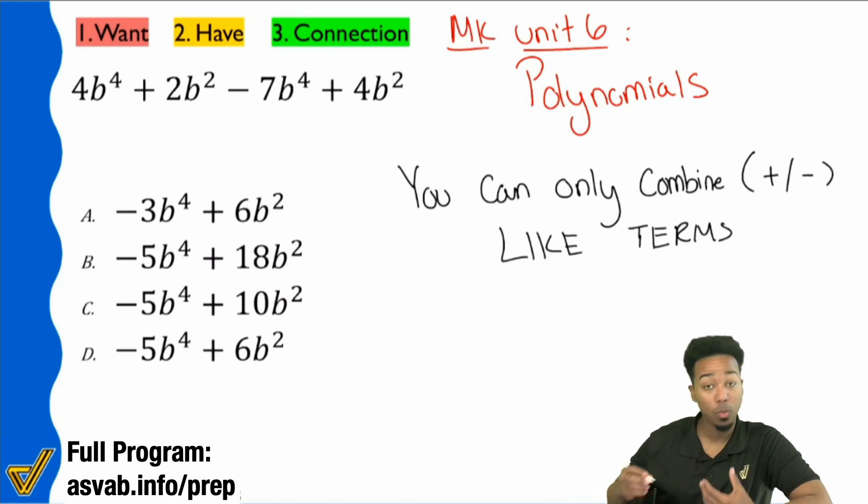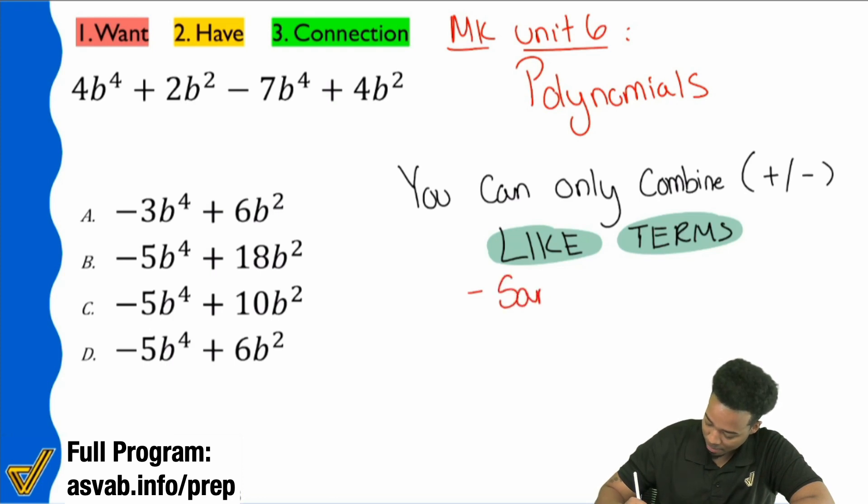So again, what are like terms? Let's go and make sure this is very clear. Like terms are terms that have the same variables and the same exponents. So right over here, same variables, same exponents.